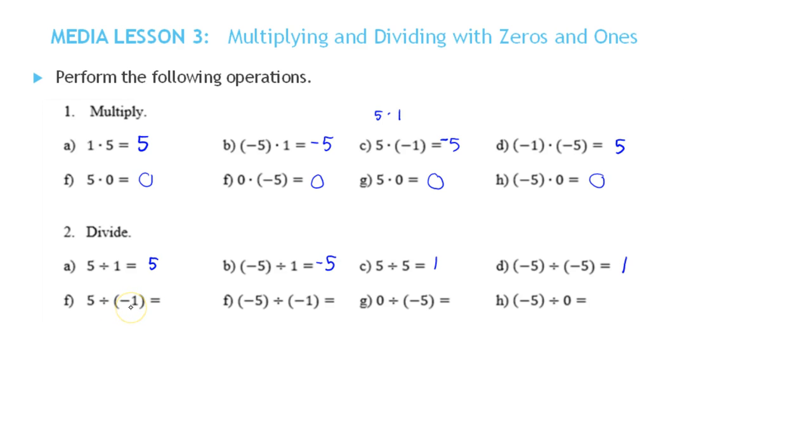Here we're dividing by negative 1 instead of just 1. But it's the same idea as we saw before. We'd say 5 divided by 1 is 5. Divide the absolute values. Since the signs are different, that means the result is negative. Negative 5 divided by negative 1 will divide their absolute values. 5 divided by 1 is 5. Since the signs are the same, the answer is positive.